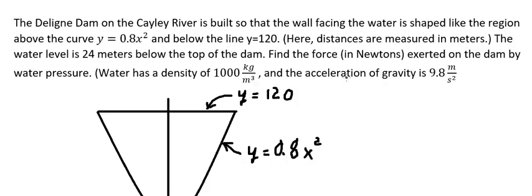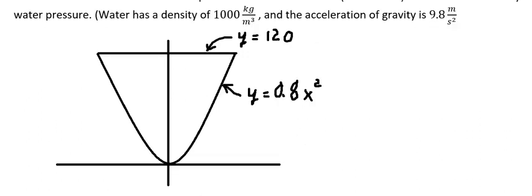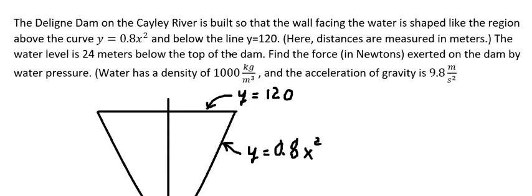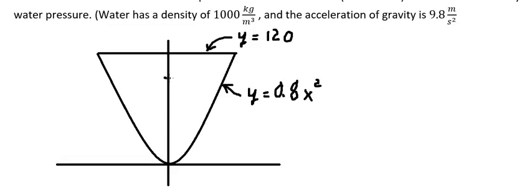The water level is 24 meters below the top of the dam. From the top at 120, we subtract 24, so the water level is at 96.